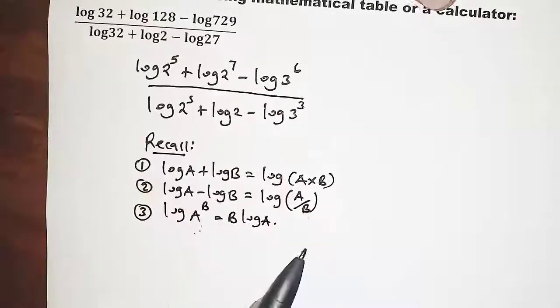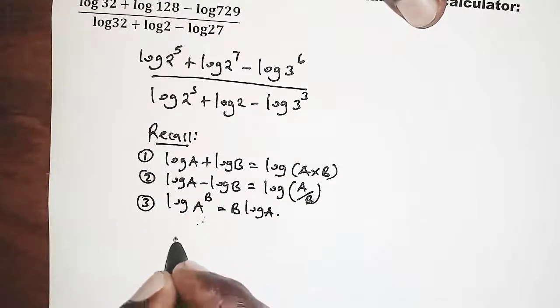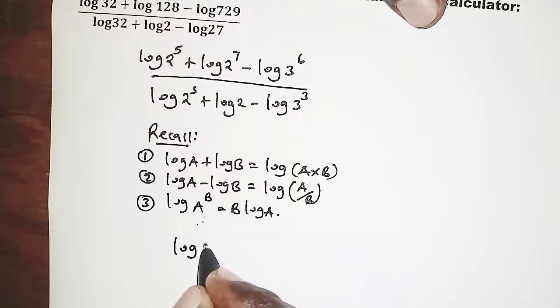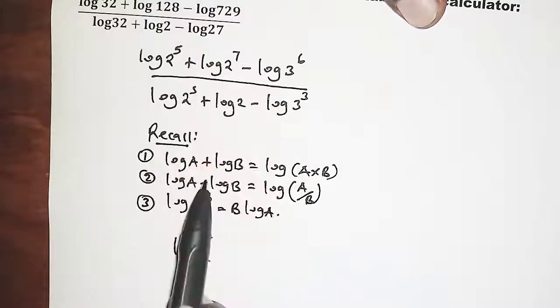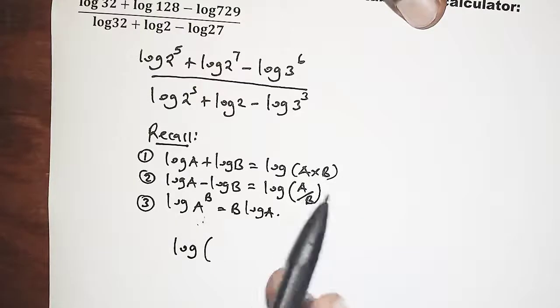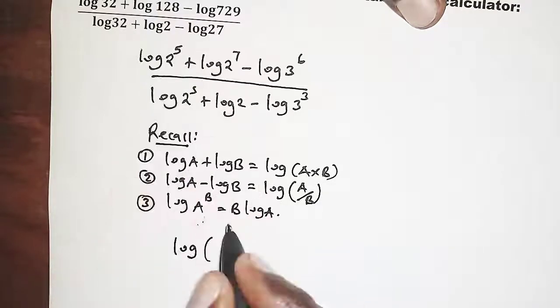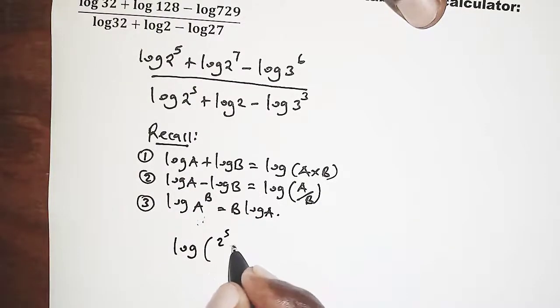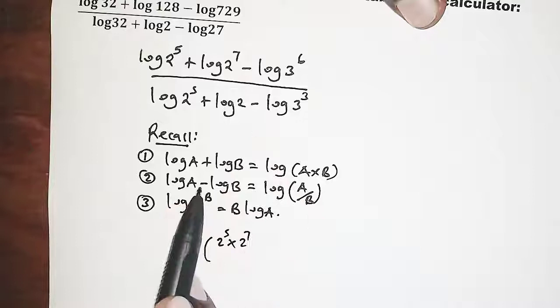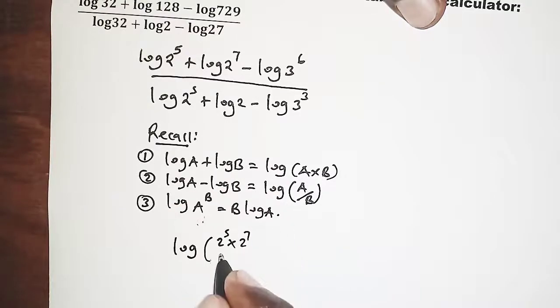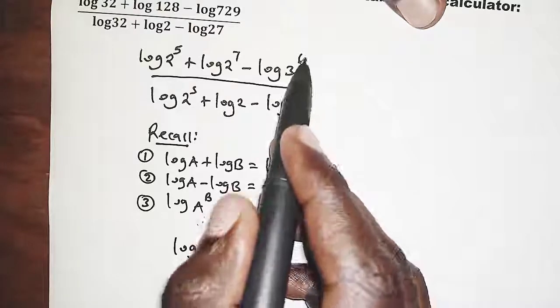Applying these laws here on the numerator, we will have logarithm of, so addition means multiplication, we're going to have 2 power 5 times 2 power 7. And then subtraction means division. So we are going to divide by 3 power 6.